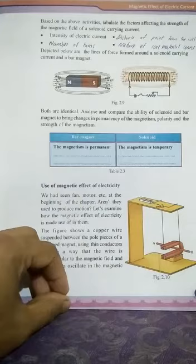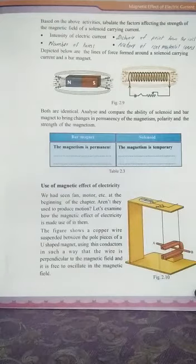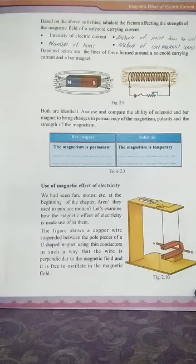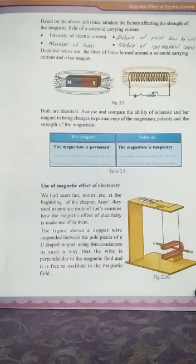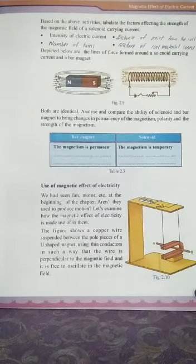Now, what are the factors on which the force acting on the conductor — or the motion of the conductor — depends? It is the direction of current and also the direction of the poles of the magnet. Now let us find one of the important uses of this property.